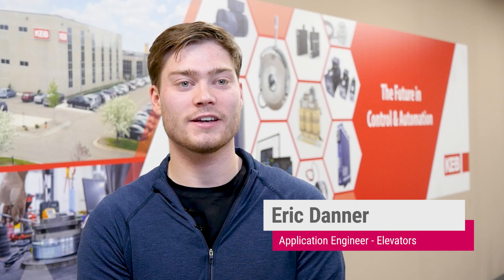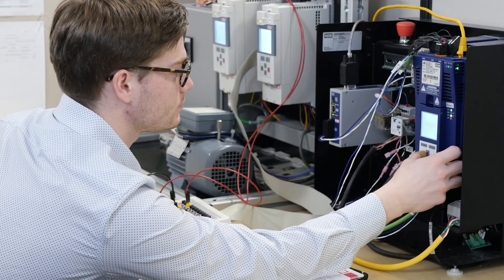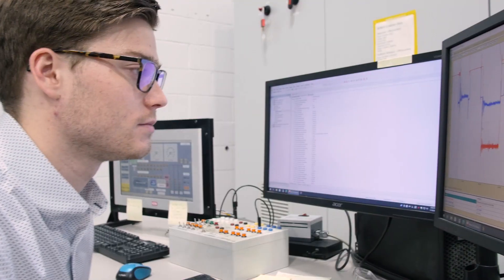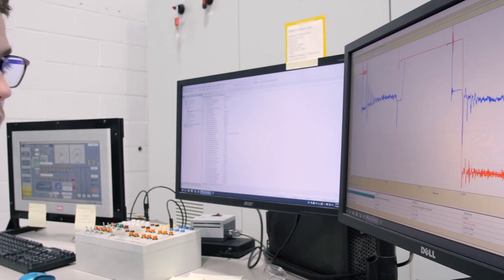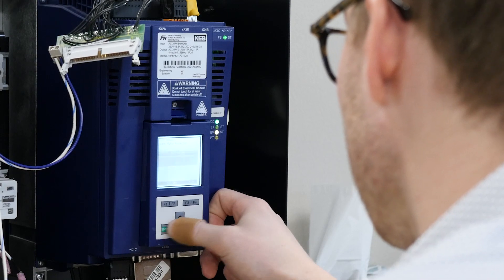Hi, my name is Eric Danner and I'm an applications engineer here at KEB America. I grew up with my father having a plumbing company and I had always been working with my hands. I wanted a job that challenged me to use my hands rather than just sitting at a desk, but I also wanted a position where I could use my mind and my engineering skills. So I thought this job was a good fit for me.